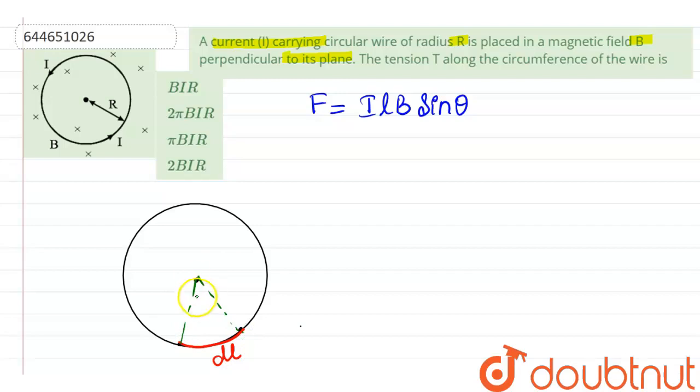Now we know that DL has a constant relationship with theta. If I am looking at this element DL, it is going to experience a small force dF and the tension generated in the wire will be towards the center because the magnetic field is perpendicular to the plane.